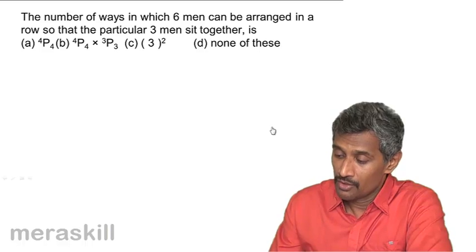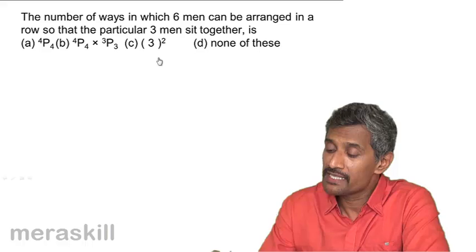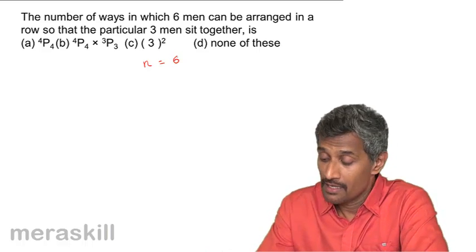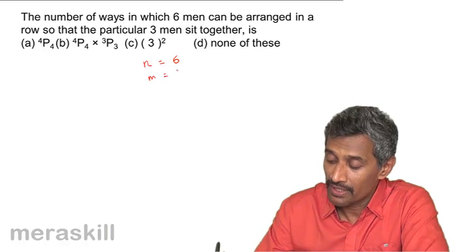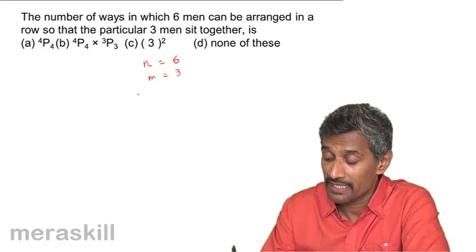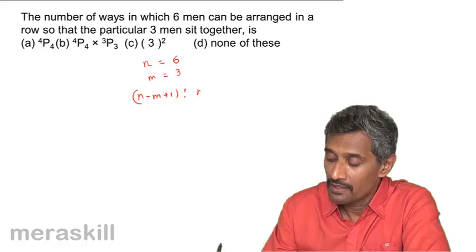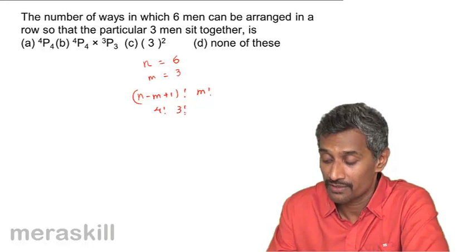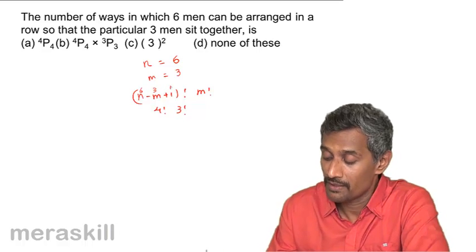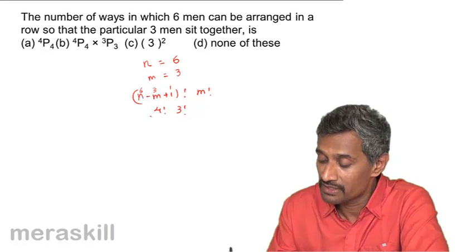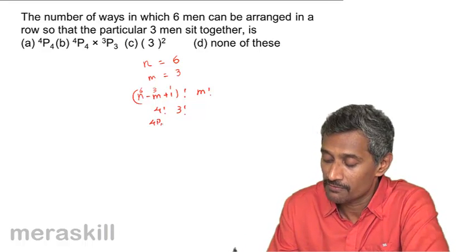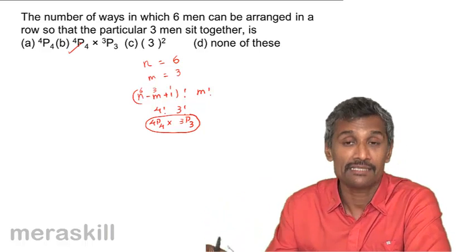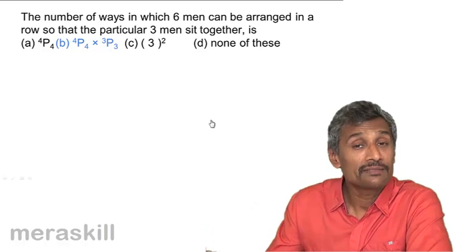Next: the number of ways in which six men can be arranged in a row such that three specific men always sit together. Here n equals six and m equals three. Using the formula: n minus m plus one factorial into m factorial equals six minus three plus one factorial into three factorial, which is four factorial into three factorial. Expressed in permutation notation, four factorial is four P four and three factorial is three P three, so the answer is four P four into three P three.